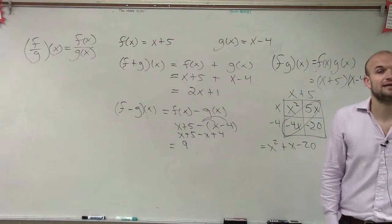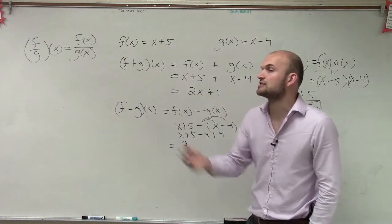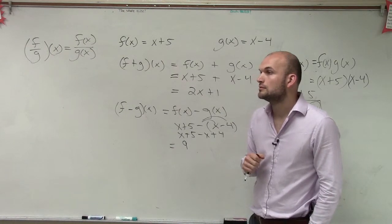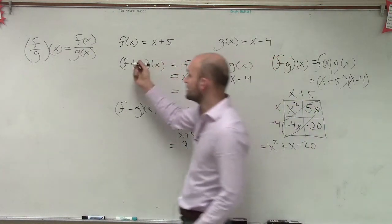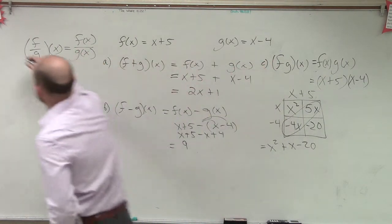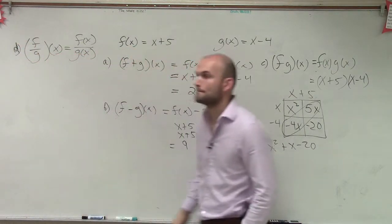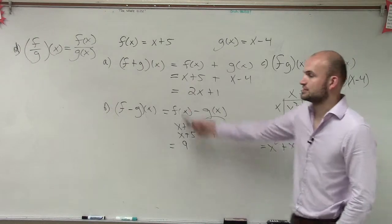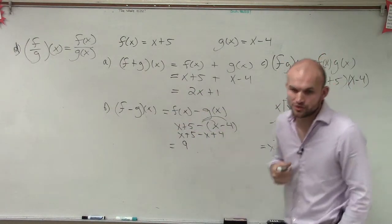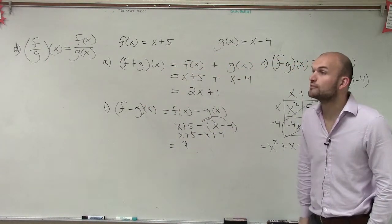So now let's do f divided by g of x. So that's going to take the f of x function divided by the g of x function. Are we supposed to take all those different processes and plug them into one equation? No. This is like a, b, c, and d. Each problem had four parts that you're supposed to do. This is part one, this is part two, part three, and part four. You're supposed to do four different parts.